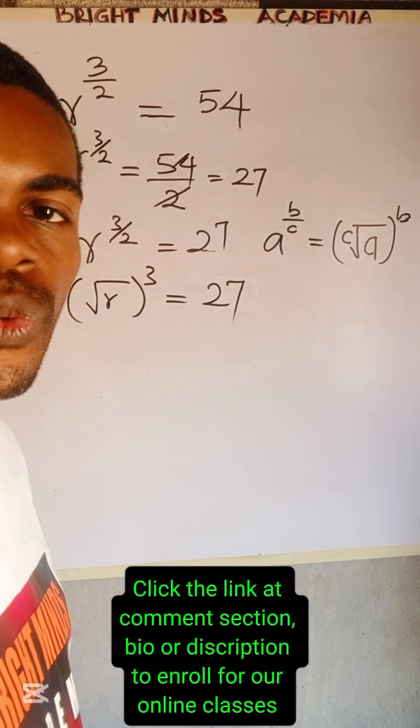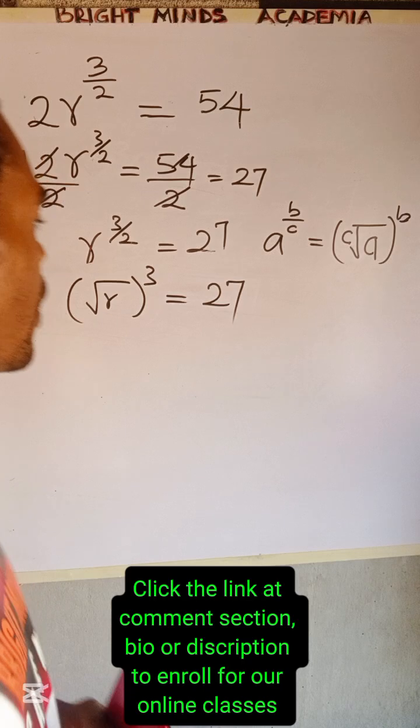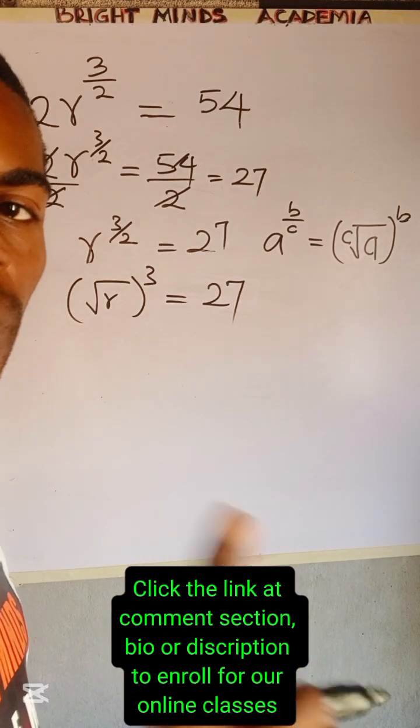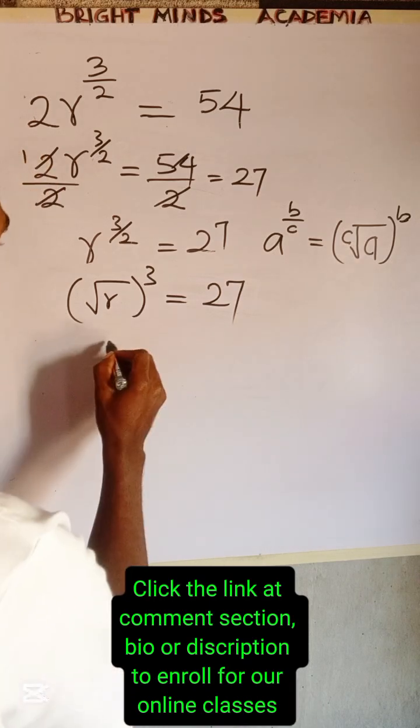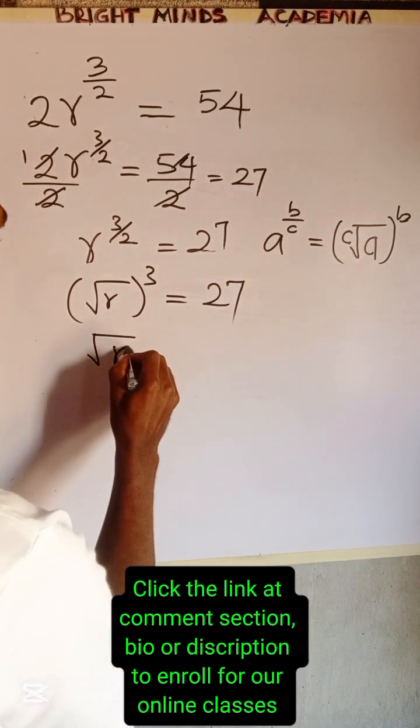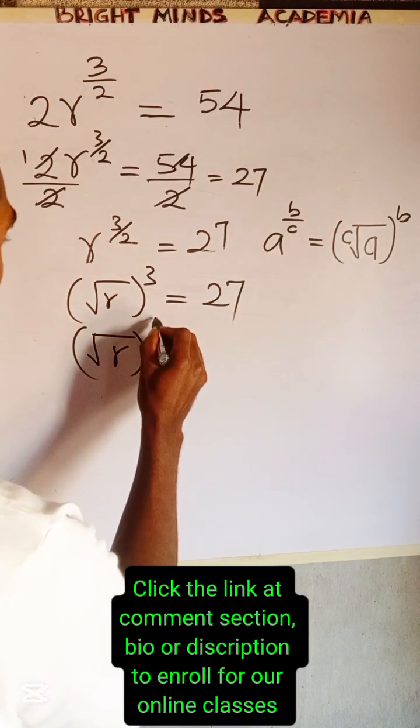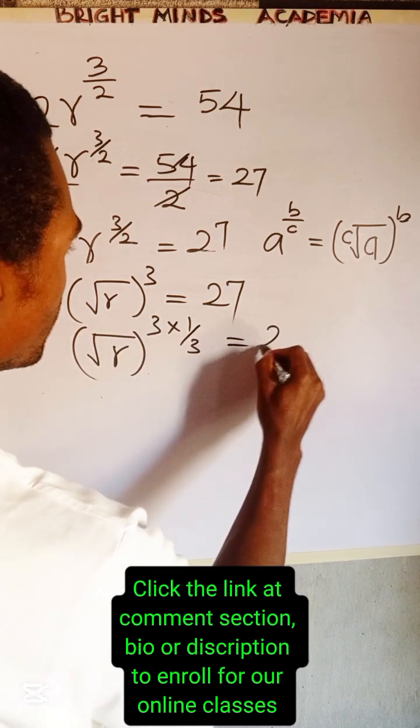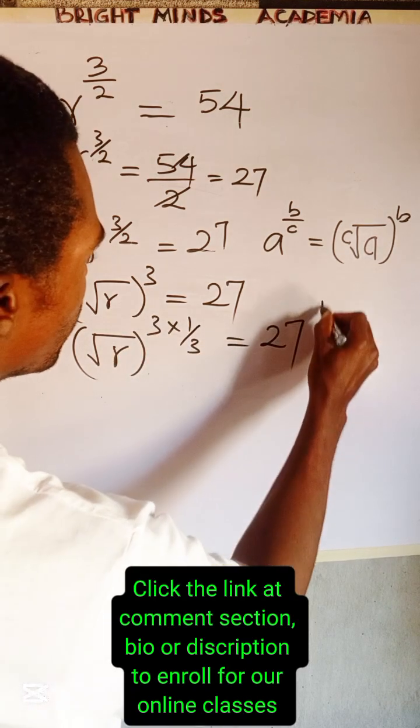So in doing that we have to cube root both sides. Now cube rooting both sides, we have to multiply the power of each side by 1 over 3, so that we have the square root of r all to the power of 3 times 1 over 3 is equal to 27 to the power of 1 over 3.